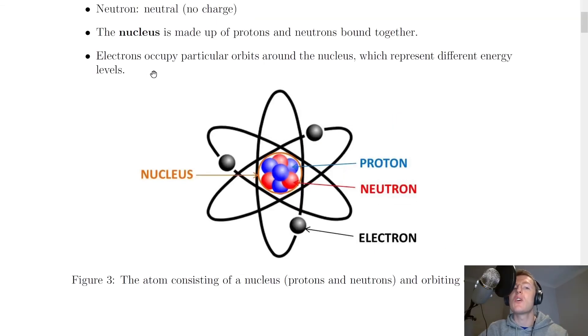And it then says electrons occupy particular orbits around the nucleus, which represent different energy levels. So you'll notice these different orbits of the electrons around the nucleus of the atom. And we're saying that these will represent different energy levels.